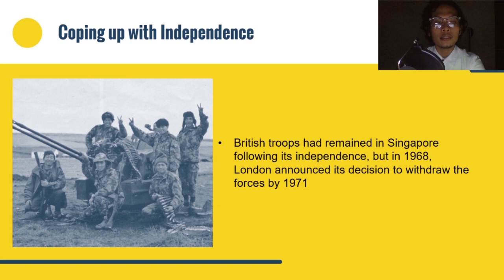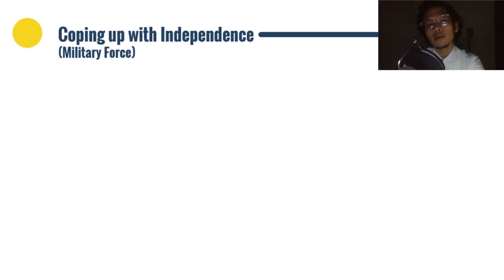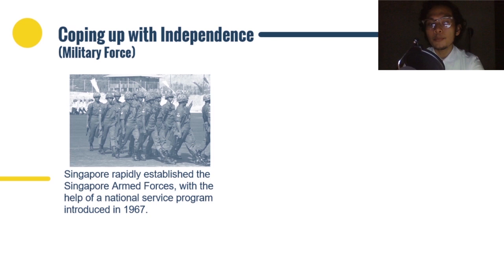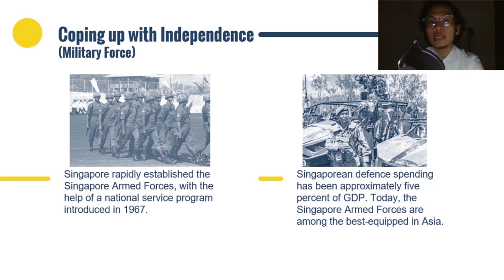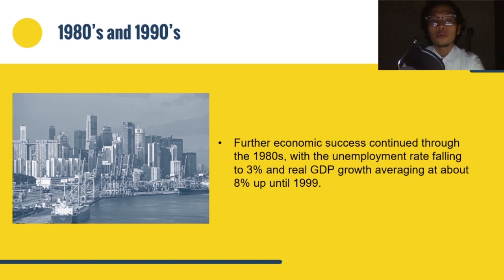With the secret aid of military advisors from Israel, Singapore rapidly established the Singapore Armed Forces with the help of a national service program introduced in 1967. Since independence, Singaporean defense spending has been approximately five percent of GDP. Today, the Singapore Armed Forces are among the best equipped in Asia. During the 1980s and 1990s, further economic success continued, with the unemployment rate falling to three percent and real GDP growth averaging about eight percent up until 1999.